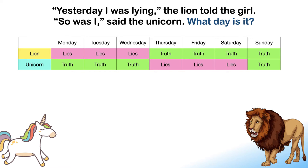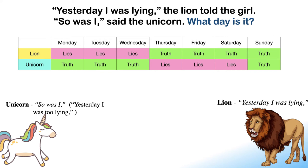So on Sundays, both must be telling the truth. Suppose the lion and unicorn made those statements today. The lion's statement is: 'Yesterday I was lying.' The unicorn's statement is: 'So was I,' meaning 'Yesterday I too was lying.'